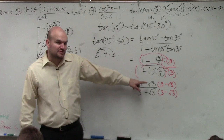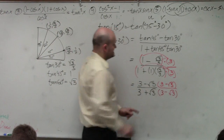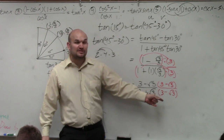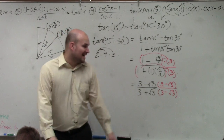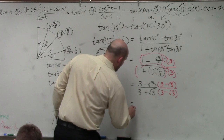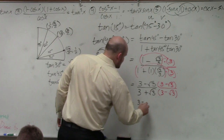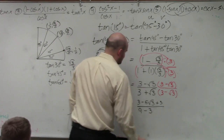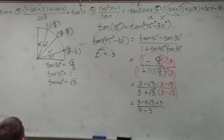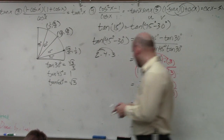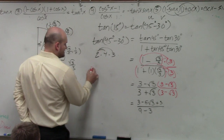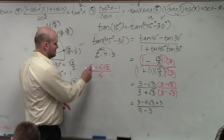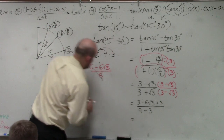Up top, you guys should know that when you have a binomial multiplied by itself with different signs, that produces a difference of two squares. I could do FOIL for the top and the bottom, but to save work, I'll write out the answers: the numerator becomes 3 minus 6 square root of 3 plus 3, and the denominator becomes 9 minus 3. If you combine those, I get 6 minus 6 square root of 3 over 6. You can see that 6 divides into 6 and 6 divides into 6, so the final answer is 1 minus square root of 3.